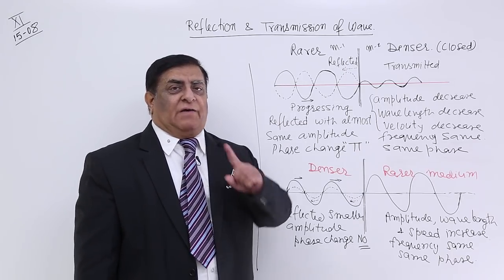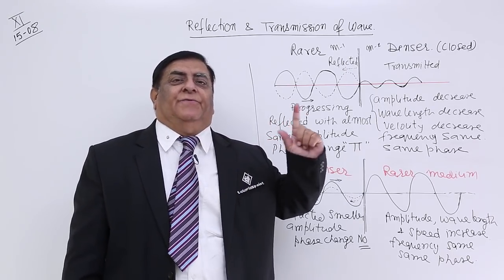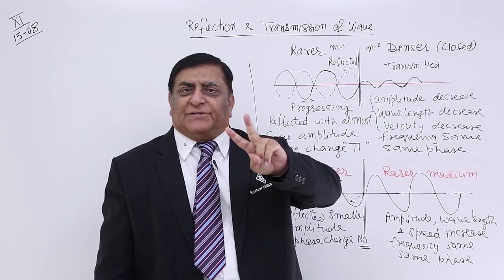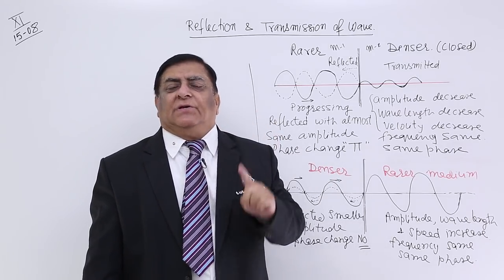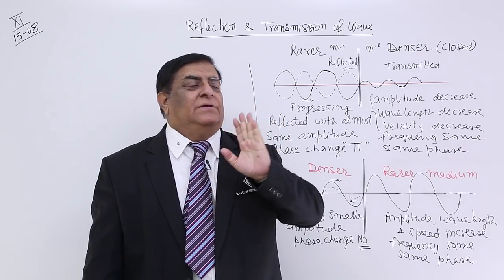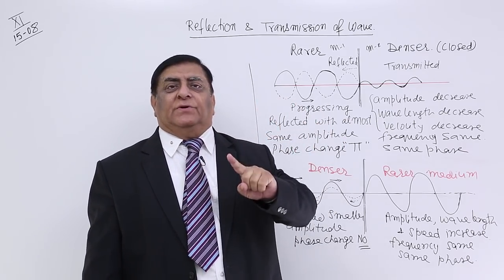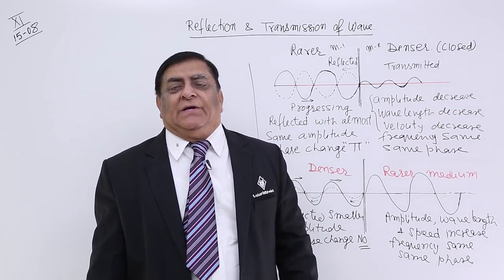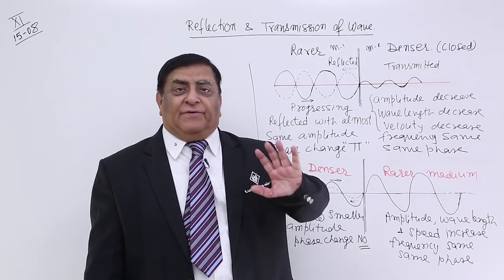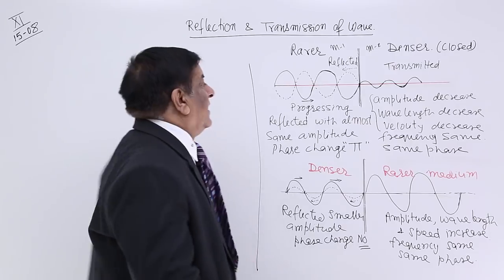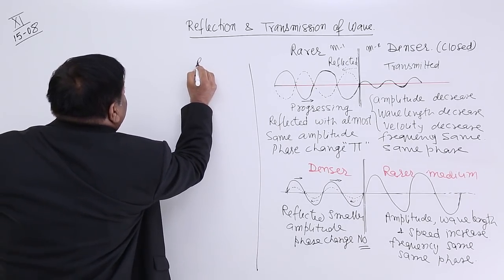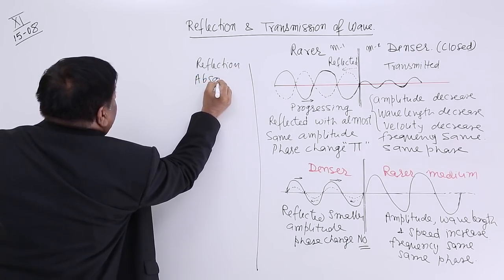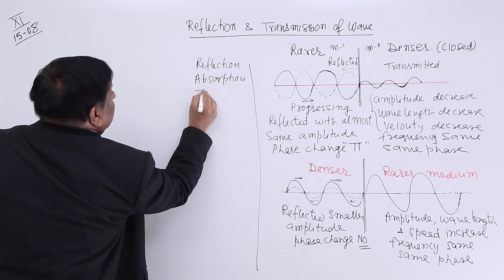Here we will study what happens when one travelling wave strikes the interface of a different medium. There are three possible actions: number one, some of the energy is absorbed; number two, some of the energy moves through the second medium — we call it transmission; and some of the energy — the waves are reflected back. So there are three actions: one is reflection, another is absorption, and the third is transmission.